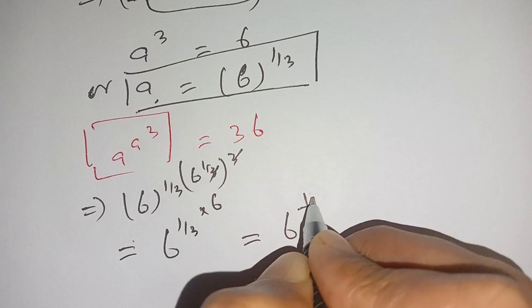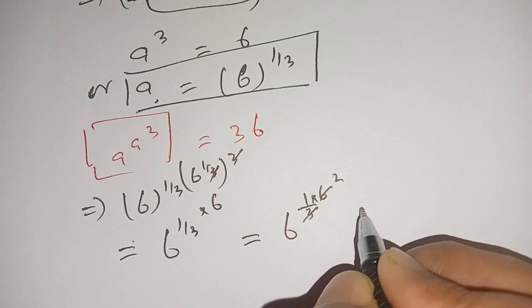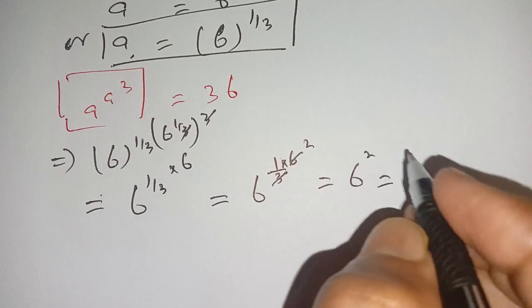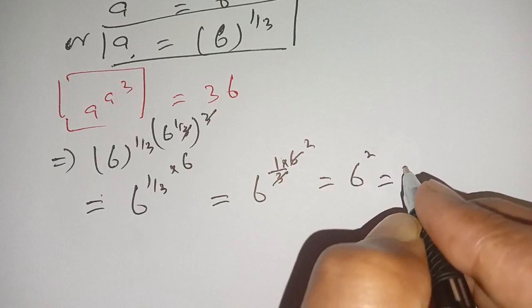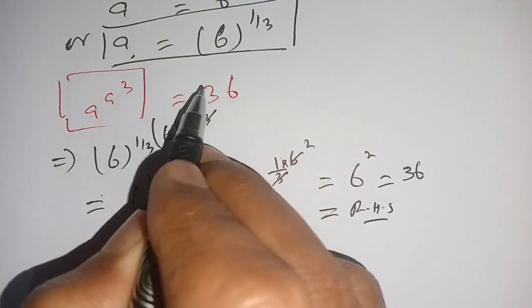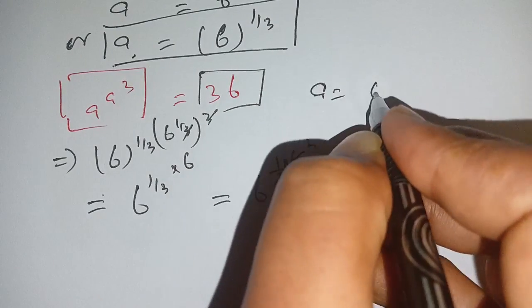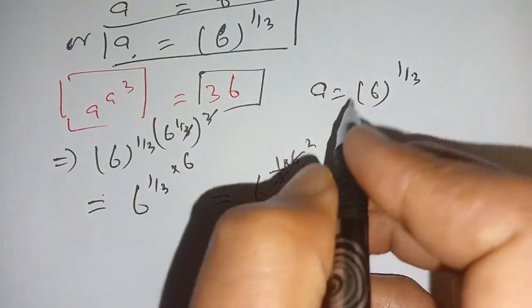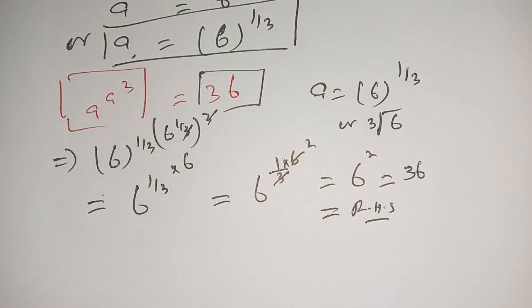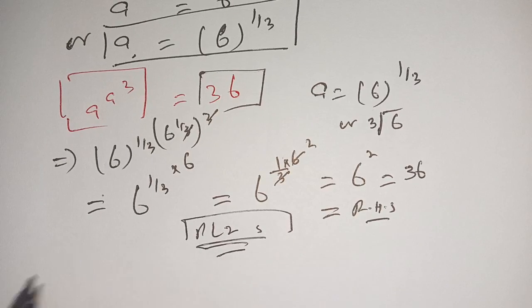We have 6 power 1 divided by 3 times 6, which becomes 3 times 2, giving 6 power 2, which is equal to 36. This equals our right hand side, which is also 36. Thus a is equal to 6 power 1 divided by 3, or the cube root of 6, is the solution of this exponential equation. If you haven't subscribed, please subscribe to the channel for more informative videos. See you in the next video, bye!